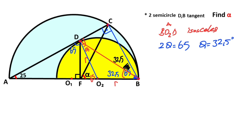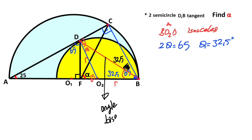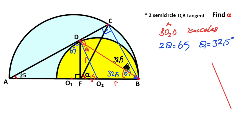If you notice, the whole angle equals 65 degrees and this angle is also 32.5 degrees. Therefore we get an angle bisector line, so this red line has become an angle bisector line.